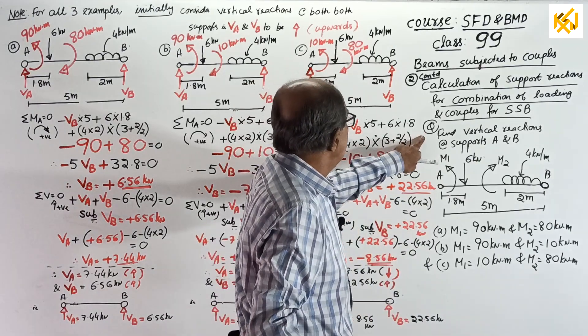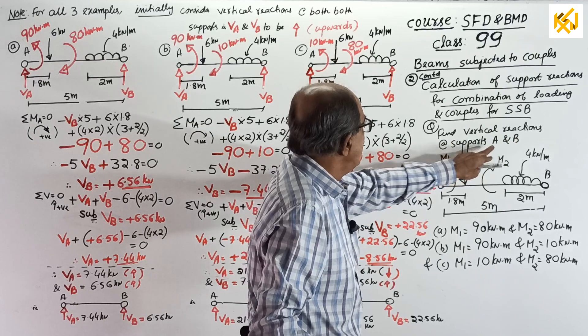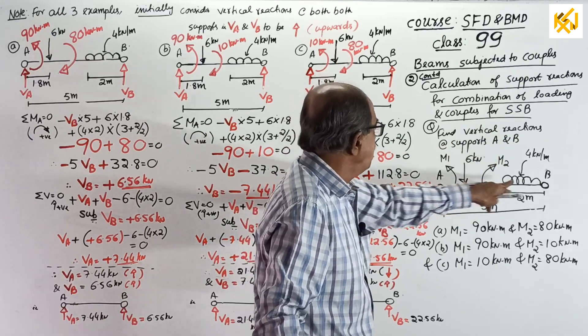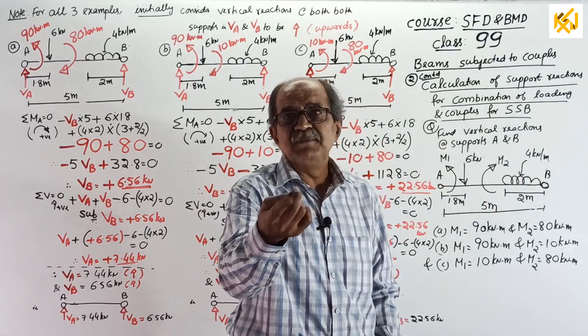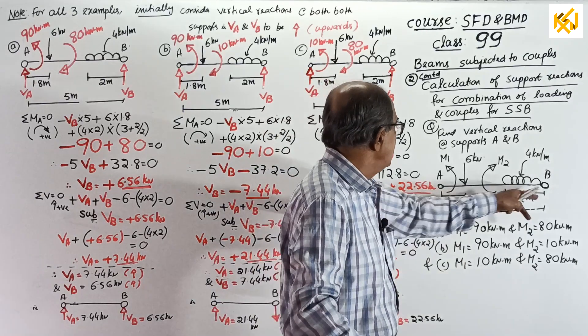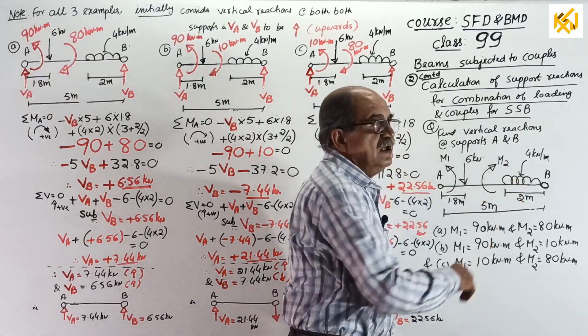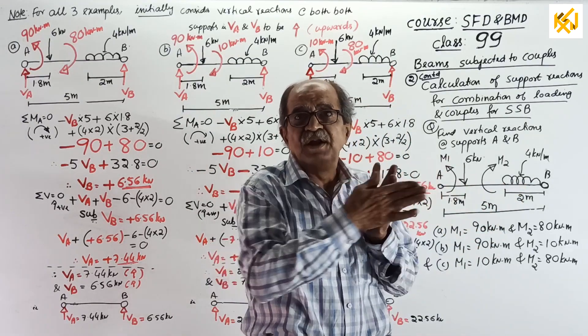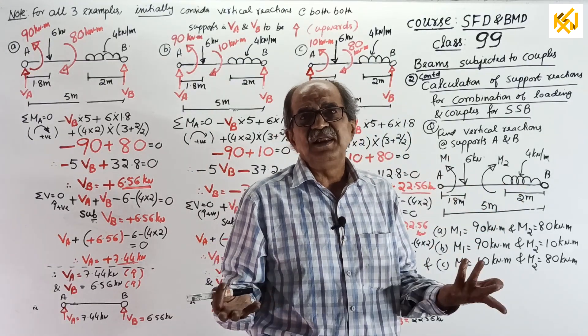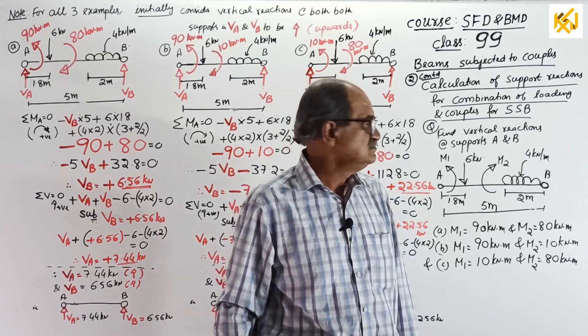Now, question. Find vertical reactions at supports A and B for both pinned. Next time, I will explain why I took both pinned. See, some people will comment, when both are pinned and it is indeterminate, but indeterminate if you want horizontal reaction. If vertical reaction is required, it is determinate. Okay.